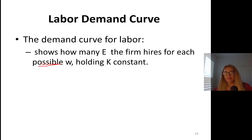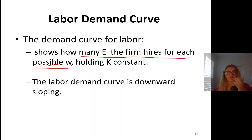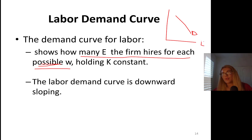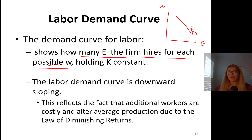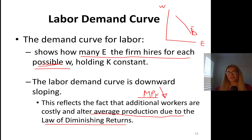In general, the labor demand curve shows how many workers the firm hires for each possible wage level, holding capital constant. The labor demand curve is downward sloping — just like general demand curves in economics, they're all downward sloping. The quantity here is employment, and the price of employment is the wage rate. This reflects the fact that additional workers are costly and alter average production due to the law of diminishing returns.